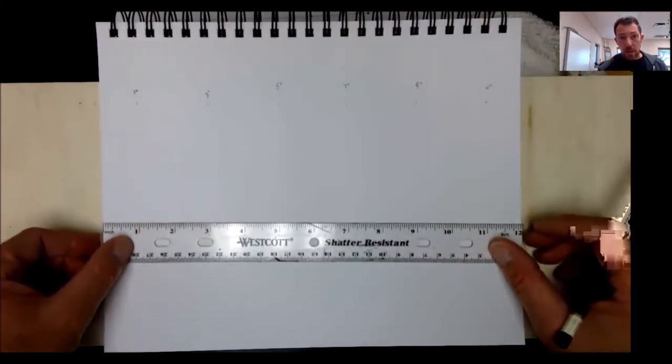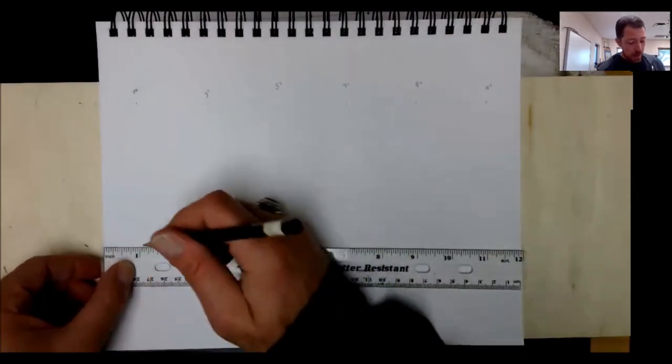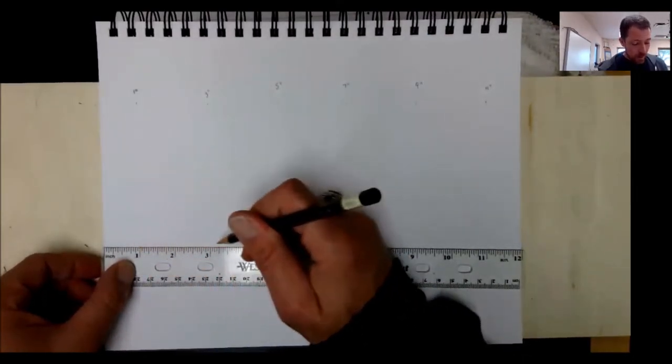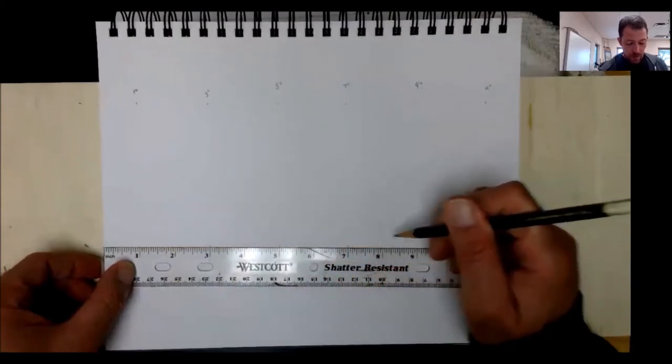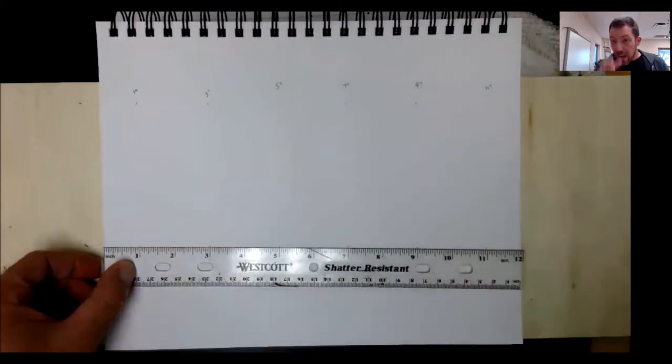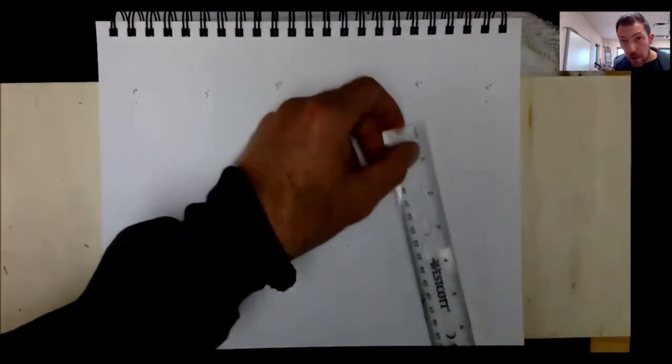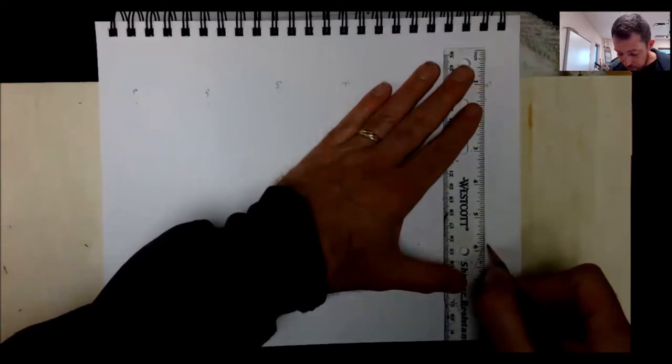Then what I'll do is slide my ruler down. Make sure it's zeroed up at the bottom. Mark at one, three, five, seven, nine, and 11. I look straight down on it so that I'm making sure that everything is perfect.